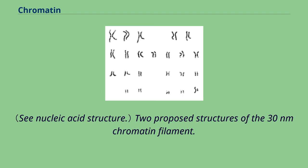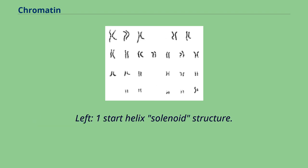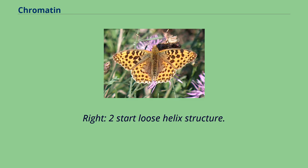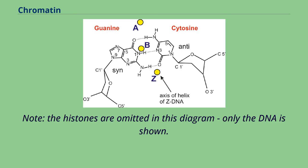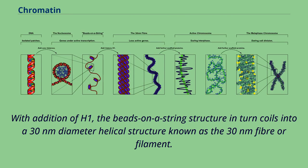Two proposed structures of the 30 nanometers chromatin filament: left, one-start helix solenoid structure; right, two-start loose helix structure. Note the histones are omitted in this diagram; only the DNA is shown. With addition of H1, the beads on a string structure can turn and coil into a 30 nanometers diameter helical structure known as the 30 nanometers fiber or filament.